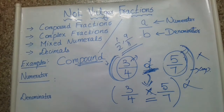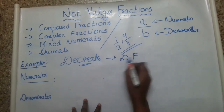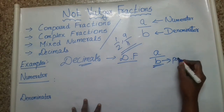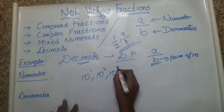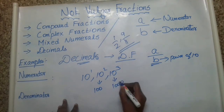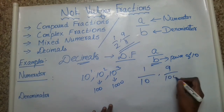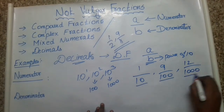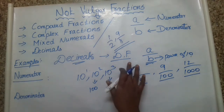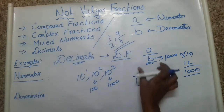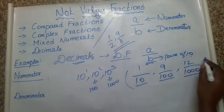Then decimals. We have already seen the definition of decimal fractions. For a decimal fraction, the numerator is divided by a denominator that is a power of 10 — meaning 10 raised to the power 1, 10 raised to the power 2, 10 raised to the power 3, and so on. For example, 1 by 10, 9 by 100, 12 by 1000. The denominator is a power of 10. So these are examples of decimal fractions and are not vulgar fractions.